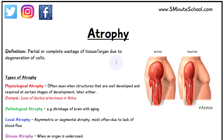Welcome to 5-Minute School, and in today's video we'll be talking about atrophy. The basic definition of atrophy is partial or complete wastage of a tissue or organ, and that's due to the degeneration of the cells.